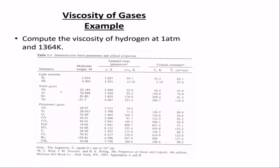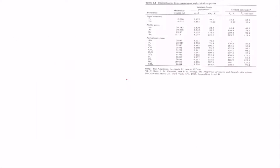From the table provided with the Chapman-Enskog equation, we identify the molar weight of hydrogen, the characteristic diameter sigma, and the epsilon value for hydrogen. For the collision integral, we need the ratio of the Boltzmann constant k times temperature T, all over epsilon. However, the table gives us the reciprocal of that ratio.